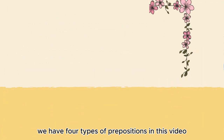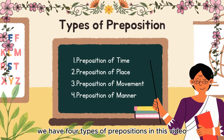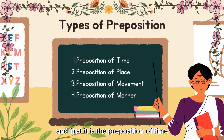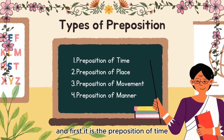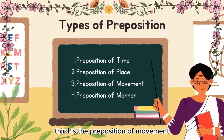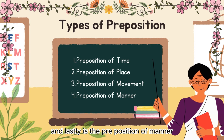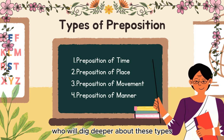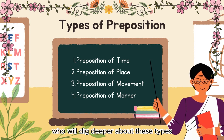Now let's go over the different types of prepositions. We have four types in this video: first, the preposition of time; next, the preposition of place; third, the preposition of movement; and lastly, the preposition of manner. We will dig deeper into each of these types in their following discussions.